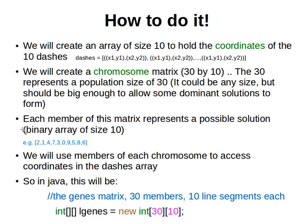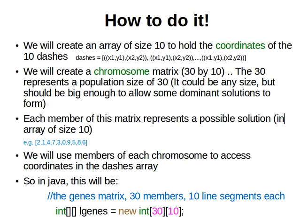This is not a binary array of size 10 now, rather an integer array of size 10. A simple example solution will look like this. We will use these numbers, the members of each chromosome, to access the coordinates in the dashes array. For example, this element here says three, that means element at index three of the dashes array.